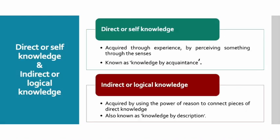Direct or self knowledge, and indirect or logical knowledge. Direct knowledge ko 'knowledge by acquaintance' bhi kaha jata hai. Jab kisi bhi object ke direct contact mein aakar, apni senses ke dwara us object ke baare mein jaankari praapt ki jati hai, toh vahi direct knowledge kehlata hai. Indirect or logical knowledge mein, reasoning and logical thinking ka role bahut important hota hai. Reasoning ke dwara, problems ko solve karke conclusions par pahuncha jata hai — tab vahi knowledge indirect knowledge kehlata hai.